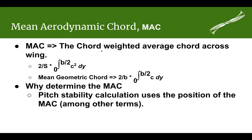What does that mean? If you're familiar with calculus you'll be able to figure this out, but even if you're not, what we're doing is multiplying the chord by itself as we go across. The impact of squaring the chord means that longer chords — typically toward the root — have more impact on this average, while chords out toward the tip have significantly less impact.